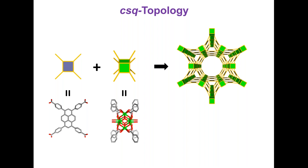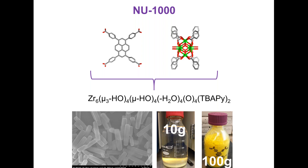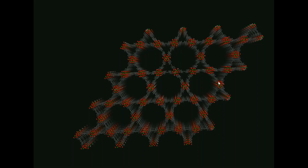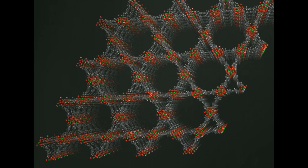This is the first MOF I want to show you. Some of you already know this material — NU-1000. It's built from pyrene tetraphenyl tetracarboxylic acid with a Zr6 cluster, but it's only connected through eight connections, not twelve. We make quite a bit of it here at Northwestern. This is the actual crystal structure — not just a rendering. You can see the hexagons and triangles. The walls between the hexagons and triangles, and the windows, are visible. This animation shows what it looks like if you dive into this metal organic framework.